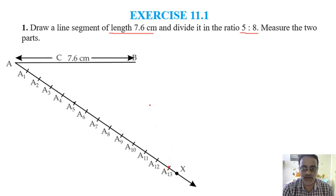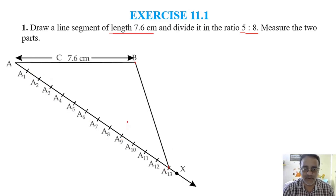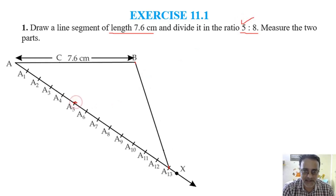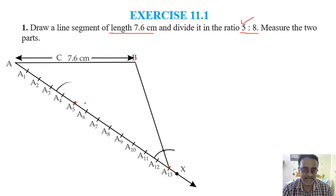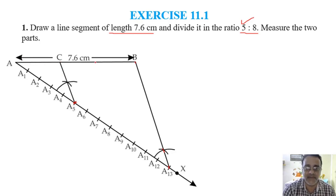The last point A13 - we have to join to B. Student asks: can the length of equal parts be anything? Yes, take a convenient length - 2 cm, 3 cm, or 1.5 cm. Join B to A13. The first part of the ratio is 5, so from A5 we draw a parallel line. Draw arcs on both sides with center A13 and A5 with the same radius, then measure and cut. Join these two - it will intersect line segment AB at point C.